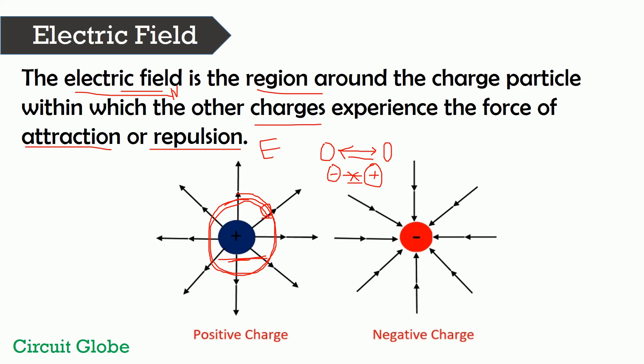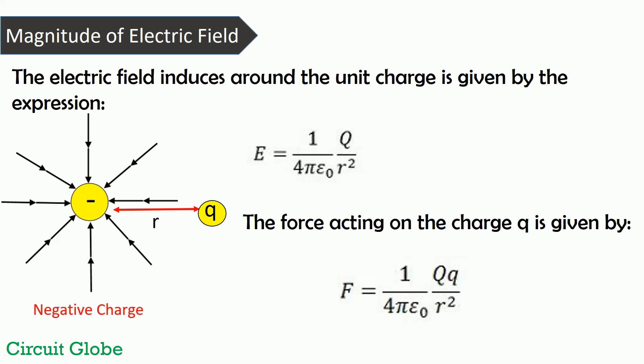Now let's talk about the direction. The positive charge particle has field lines going in the outward direction, while the field of the negative charge particle moves in the inward direction. This happens because the positive charge always repels the test charges while the negative charge always attracts them. Hence, the electric field goes outward for positive charge and inward for negative charge.